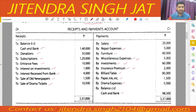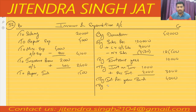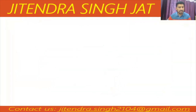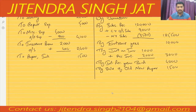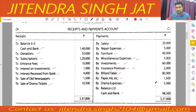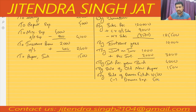Sale of old newspaper: 1,500 — by sale of old newspaper 1,500. Then sale of drama tickets: 10,500. Drama expenses are given on the payment side as 5,000, so we adjust here and record the net value: 10,500 minus 5,000 = 5,500. So by sale of drama tickets net of drama expenses: 5,500.